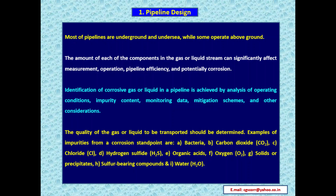Under pipeline design: most pipelines are underground or undersea, while some operate above ground. The amount of each component in the gas or liquid stream can significantly affect measurement, operation, pipeline efficiency, and potentially corrosion. Identification of corrosive gas or liquid is achieved by analysis of operating conditions, impurity content, monitoring data, mitigation schemes, and other considerations. Examples of impurities from a corrosion standpoint are: bacteria, carbon dioxide, chloride, hydrogen sulfide, organic acids, oxygen, solids or precipitates, sulfur-bearing compounds, and water.